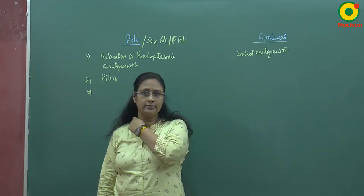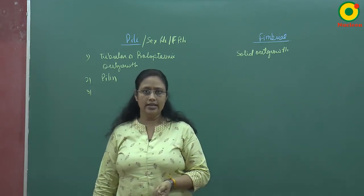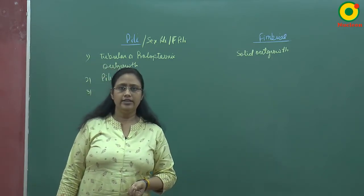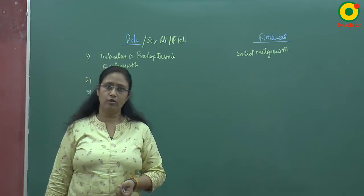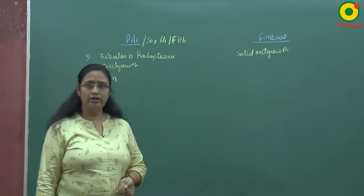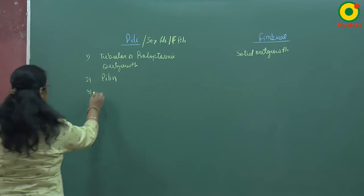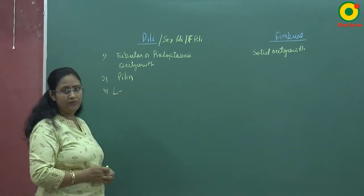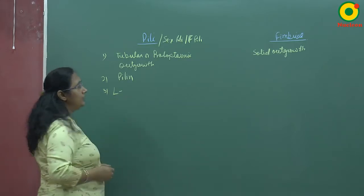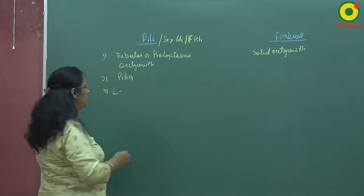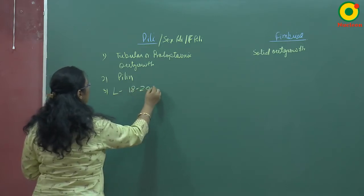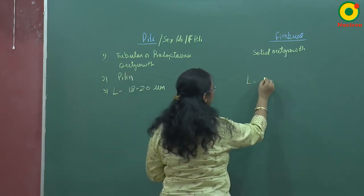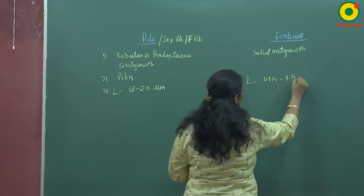Let's see their dimensions. The length in case of pili is 18 to 20 micrometers, whereas fimbrae is comparatively very short in length — it is 0.15 to 1.5 micrometers. Please note the units: this is micrometers.